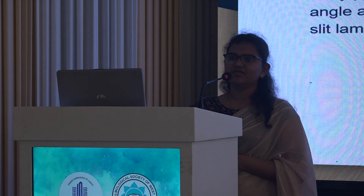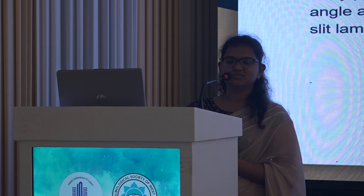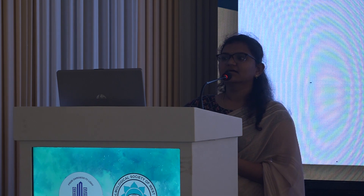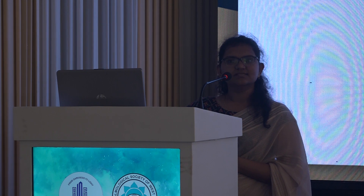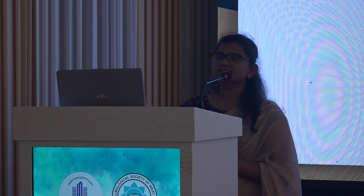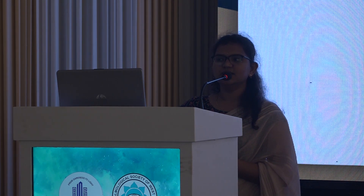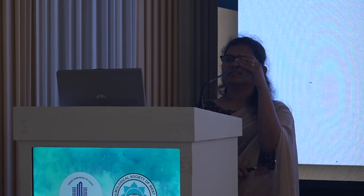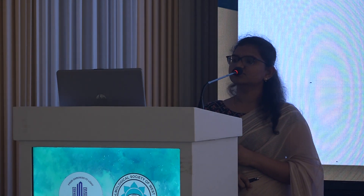In indirect gonioscopy, the mirror image of the angle is visualized using different lenses. There are two types: the scleral type of lens and the corneal type of lens. The scleral type, most commonly the Goldmann lens, can be a single mirror, two-mirror, or three-mirror lens. Other types of gonioscopes include the Ritch and Thorpe lens.